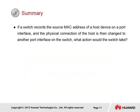In summary for this section, we have one question: if a switch records the source MAC address of a host device on a port interface, and the physical connection of the host is then changed to another port interface on the switch, what action would the switch take? From the point of connection, as the port is made physically active, a gratuitous ARP packet will be generated and propagated over the network, then received by the switch, which will proceed to update the MAC address table. When the connection is removed and the physical link is down, the connection loss will be detected and the MAC entry for that port interface will be removed from the MAC address table. Reconnection to another port will again initiate a new gratuitous ARP packet received by the switch, allowing a new entry in the MAC address table to be generated.